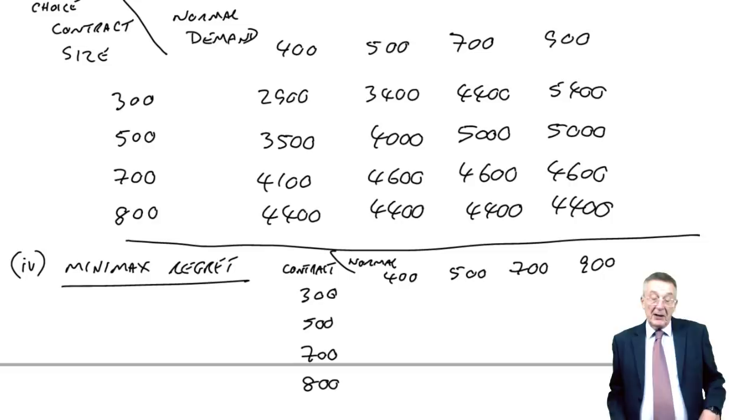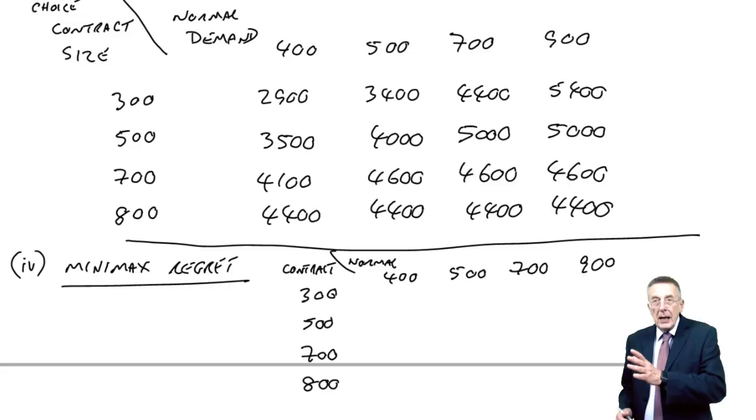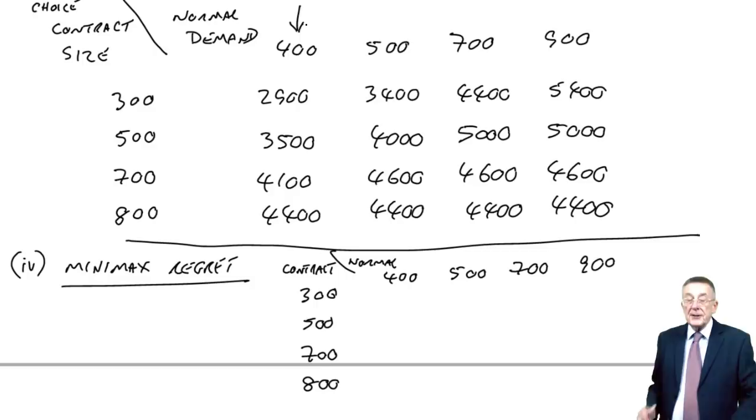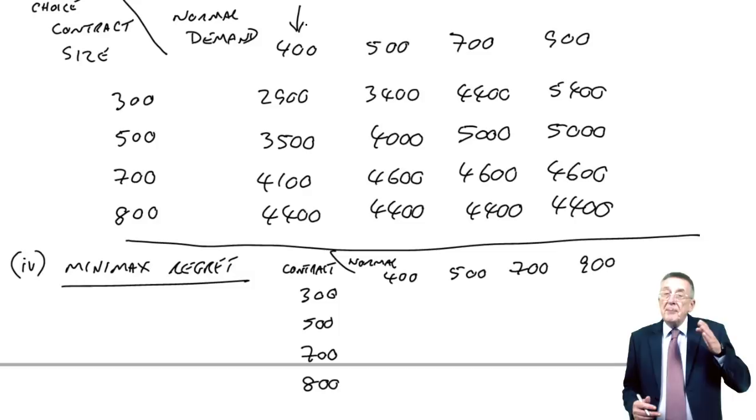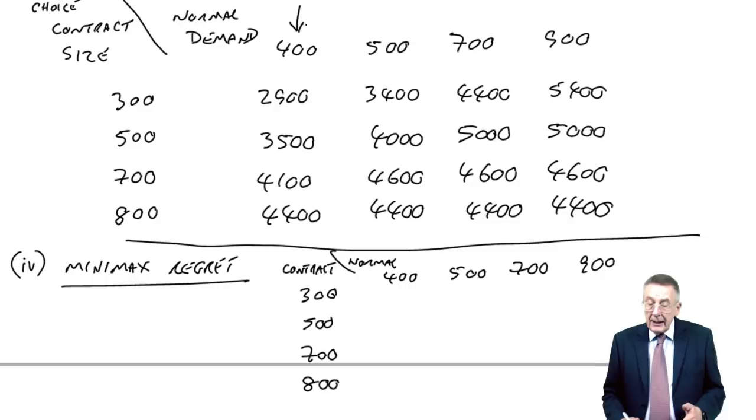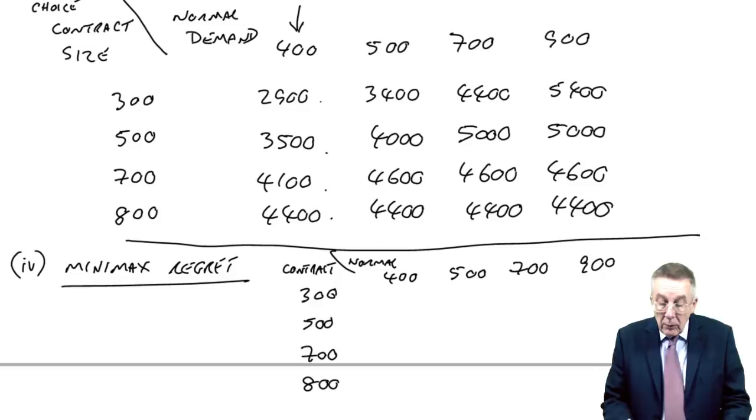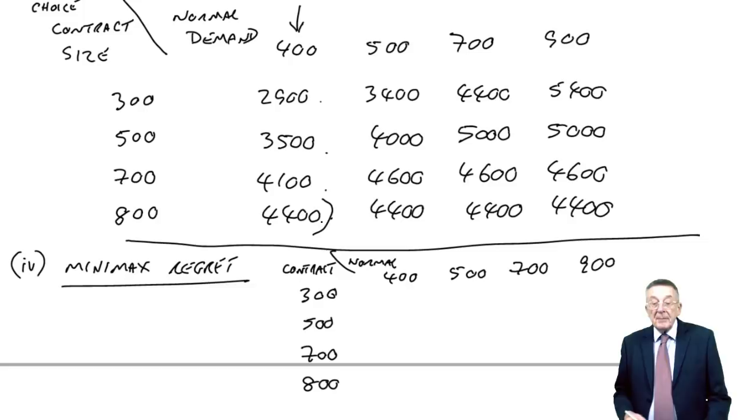But we go to each uncertain item in turn. So the uncertain item is the normal demand. So we go to the first one, which is 400. And we say to ourselves, forget all the others. If the demand is 400, which would have been the best contract to choose? Well, if demand is 400, depending on contract size, we'd either get 2935, 3500, 4100, or 4400. Surely the best of those would have been to go for 800 and get 4,400. So if we had gone for 800, we'd have no regret.